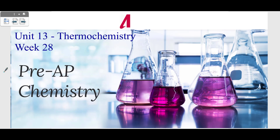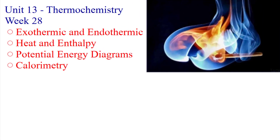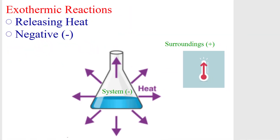Hey, this is Mr. Aiden. This is pre-AP chemistry week 28. We're in a new unit, unit 13 thermochemistry. It's going to be getting hot in here with some thermochemistry. We're going to be taking a look at exothermic and endothermic reactions, the difference between heat and enthalpy, potential energy diagrams, and last but not least calorimetry. So let's take a look at week 28.